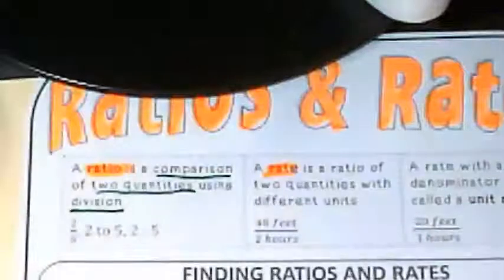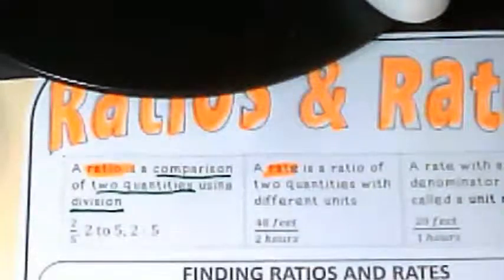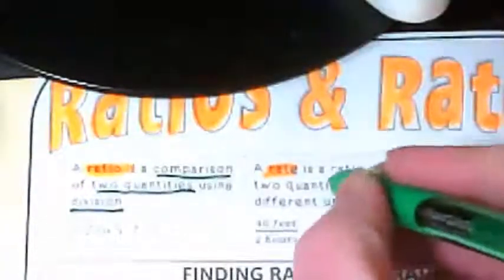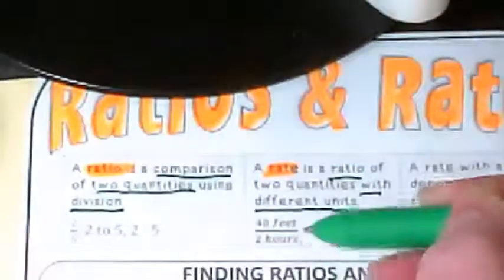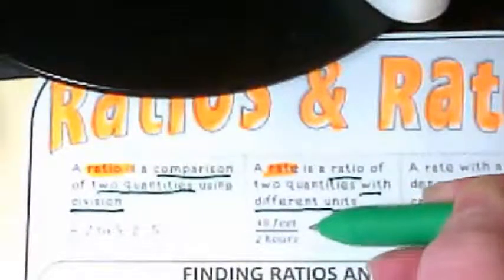So we'll be practicing writing those three ways in a moment. The next definition is rate. A rate is a ratio with different units. So feet to hours, distance to time, money to gallons.